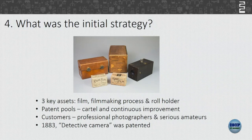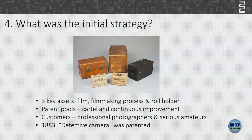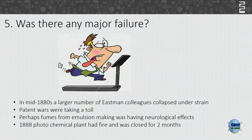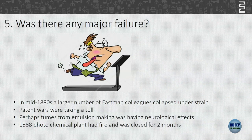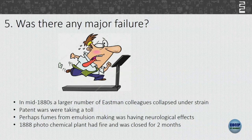Photography was still a professional kind of thing — only professional photographers were involved. By 1883 a detective camera was patented. Then there were major failures: large numbers of colleagues collapsed under strain and patent wars started happening. A lot of time and money was spent filing patent cases.